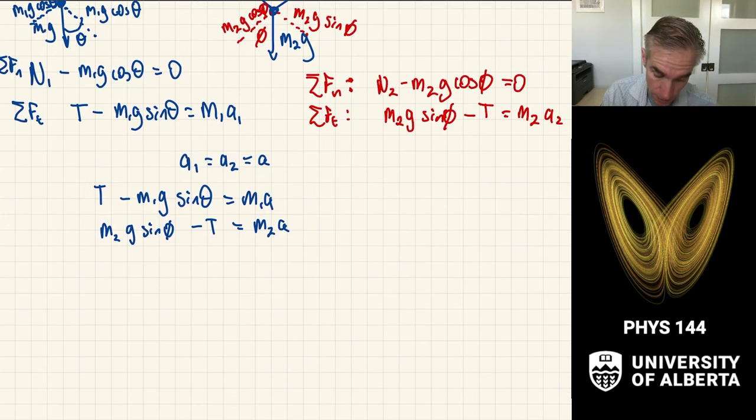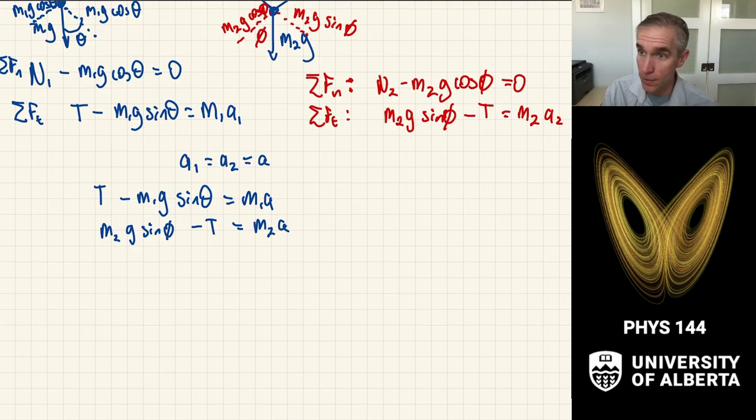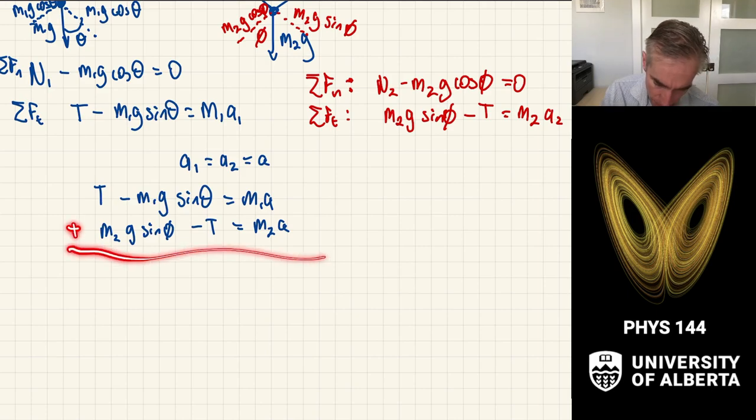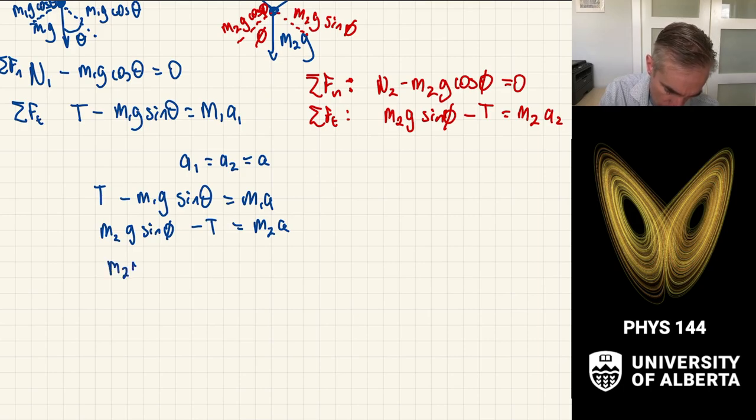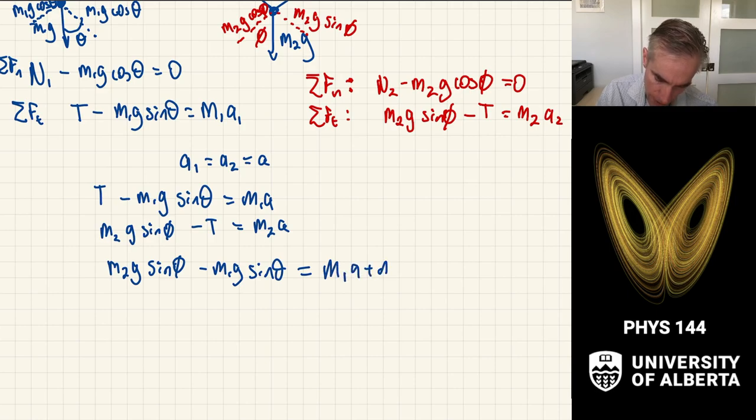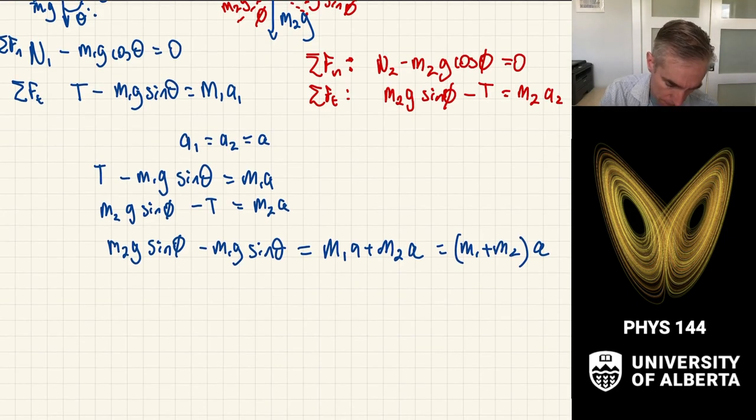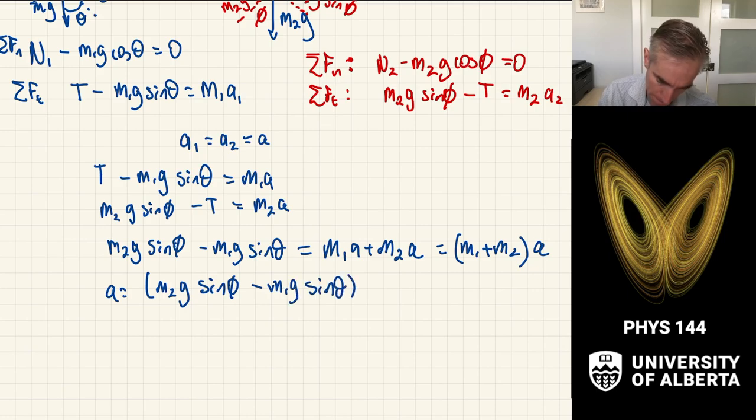The question asks for acceleration, so what I can do is a fairly simple elimination, because if I just add these two equations together, I get the tensions will cancel out. And so when I do that, I get that M2g sin phi minus M1g sin theta is equal to M1A plus M2A, or factoring out the A, M1 plus M2 times A. And then I can divide through by the sum of the masses. The acceleration is equal to M2g sin phi minus M1g sin theta over M1 plus M2.